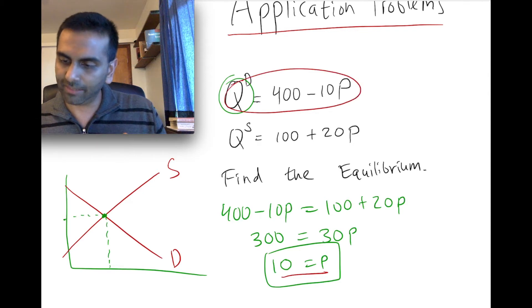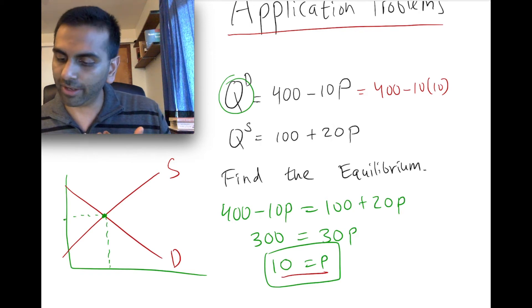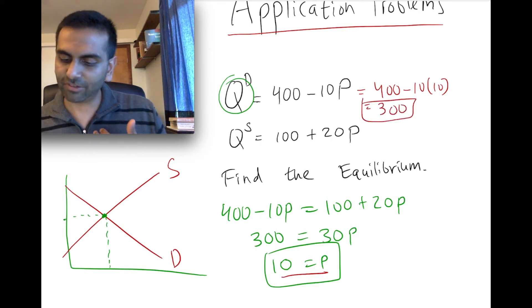So we just plug in this equation if p is 10, q will equal 400 minus 10 times 10, which is 400 minus 100, which gives us 300. Let's just make sure we get the same thing here. If p is 10, this is 100 plus 20 times 10 is 200. 100 plus 200 is 300.